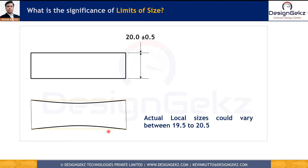The actual local size is the actual value of any individual distance at any cross section of a feature of size. We can measure this part at any cross section and that will be called the actual local size. We can get many actual local sizes on a single feature of size, and each actual local size has to be within the limits of size in order to accept this part as a functional part.